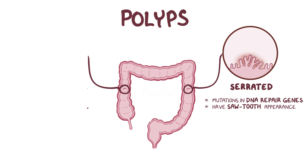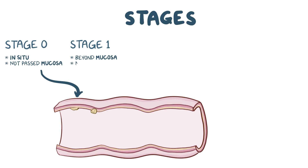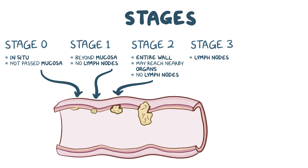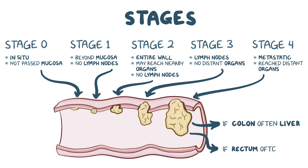When tumors become cancerous, they can be categorized into stages. Stage 0 is carcinoma in situ, meaning that the tumor has not grown beyond the mucosa. Stage 1 is when the tumor has grown beyond the mucosa but has not spread to lymph nodes or distant organs. Stage 2 is when the tumor has invaded the whole colonic or rectal wall and may have reached nearby organs or tissues, but still has not spread to lymph nodes or distant organs. Stage 3 is when the tumor has spread to lymph nodes but still hasn't spread to distant organs. Finally, stage 4 is metastatic, meaning that the tumor has spread to distant organs. The most common site of metastasis for colon cancer is the liver, and for rectal cancer it's the lungs.